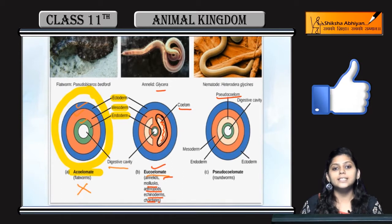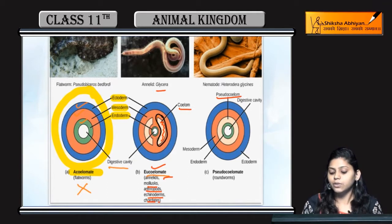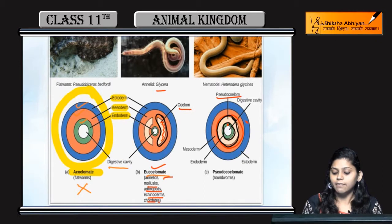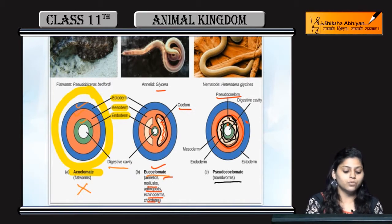Next we will talk about pseudocoelom. In pseudocoelom, coelom is present but not within the mesodermal lining — it is scattered between endoderm and ectoderm. As you can see here, this is the endoderm, this is the ectoderm, and this is the mesodermal lining. The coelom is present between the mesodermal lining and the endodermal lining. So these are called pseudocoelomates, and an example is roundworms.